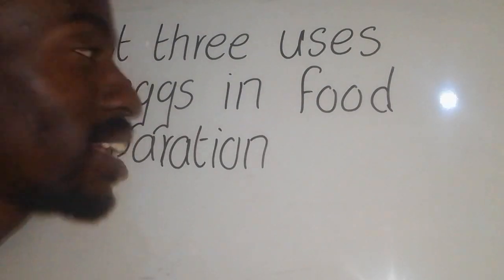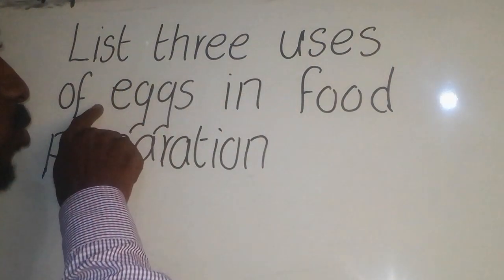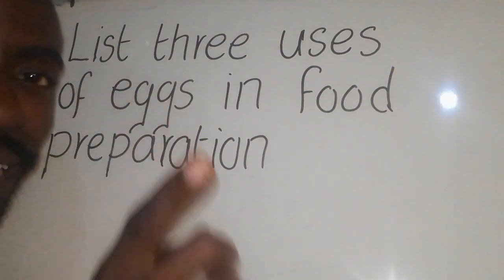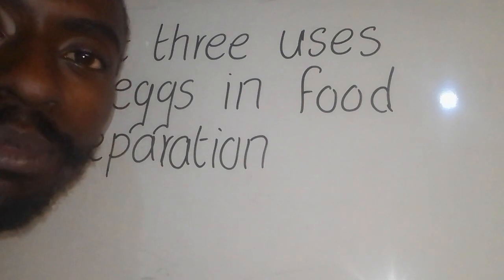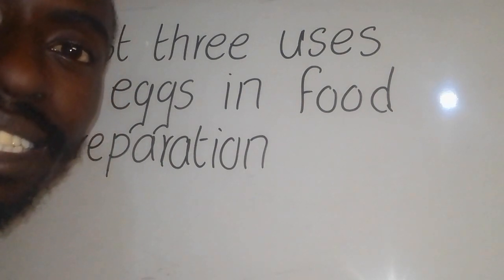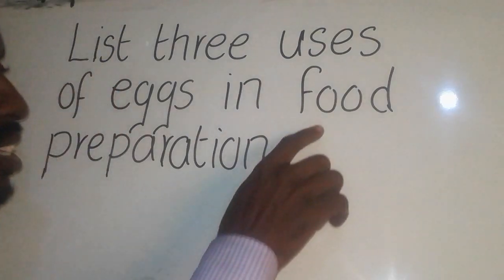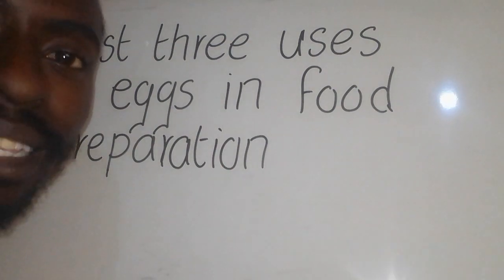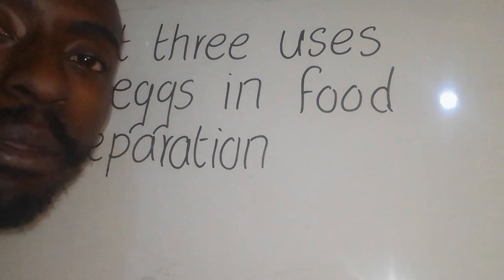We have a question that says, list three uses of eggs in food preparation. When they say an egg, an egg is an oval-shaped structure which is the fertilized egg and it is mainly rich in proteins. When they say food preparation, these are ways or methods in which food is being prepared.